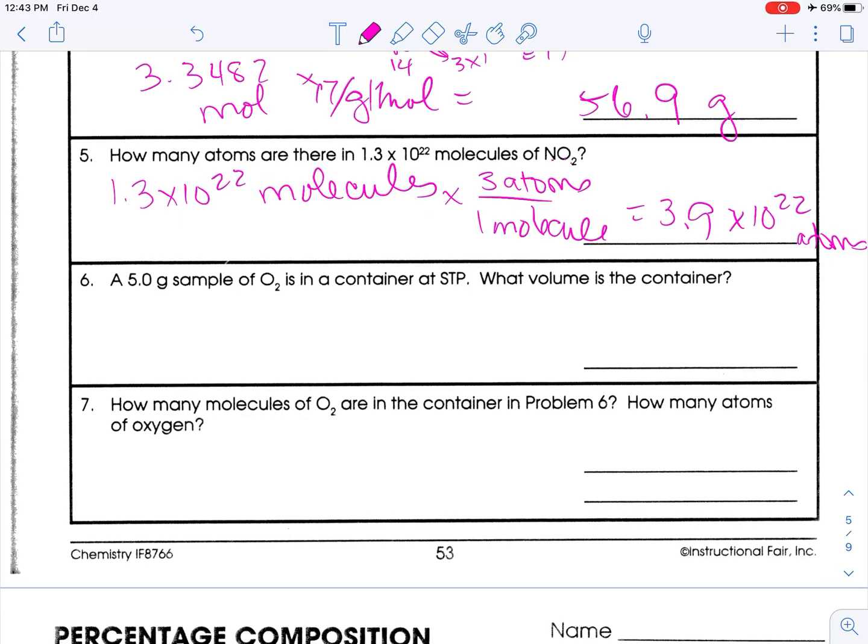A 5-gram sample of O2 is in a container at STP. What is the volume? So we're going to go from mass to moles, moles to volume. Divide by GFM. 16 times 2 is 32. So 5 divided by 32. And I get 0.15625, and this is moles. And then we're going to multiply it by 22.4, the molar volume. And we're going to get 3.5 liters. Perfect, my sig figs are already correct.